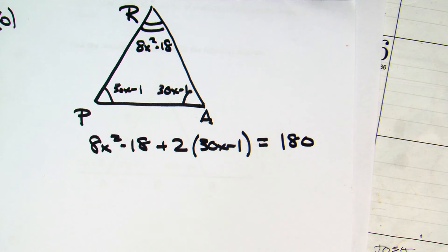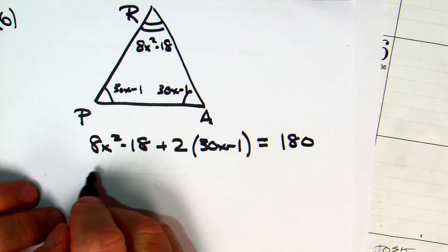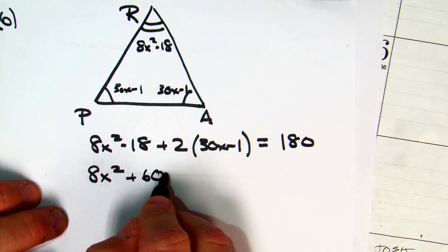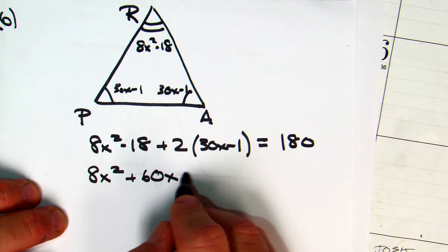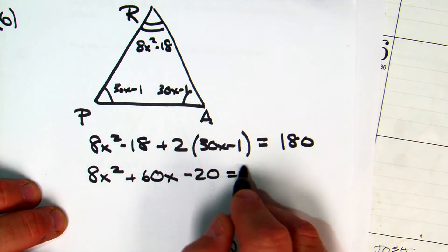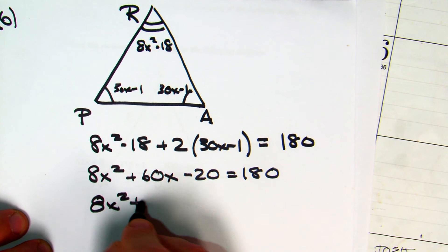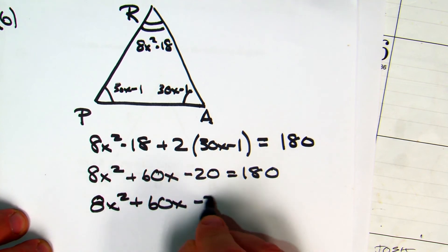Everybody good with that idea? Because there's 2 of them. You could write them separately if that's easier for you. So when I'm done combining all my like terms, I'm going to have 8x squared plus 60x minus 20 equals 180. I'm then going to bring the 180 over, and I'm going to have 8x squared plus 60x minus 200 equals 0.